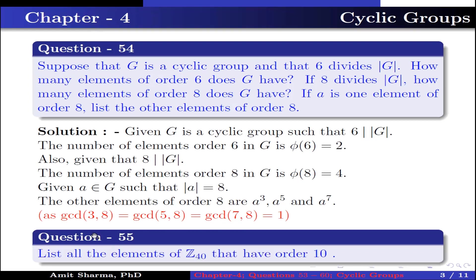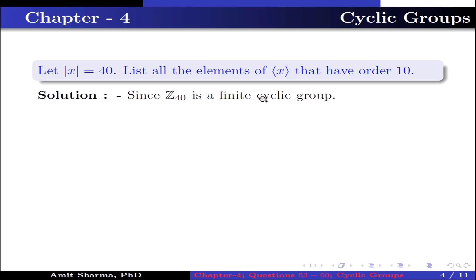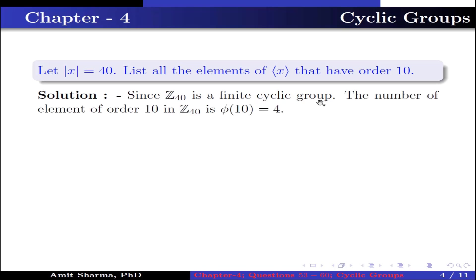Question number 55. List all the elements of Z₄₀ that have order 10. Also, let the order of X be 40 and list all elements of the group generated by X that have order 10. Since Z₄₀ is a finite cyclic group, the number of elements of order 10 in Z₄₀ is φ(10), which is equal to 4.